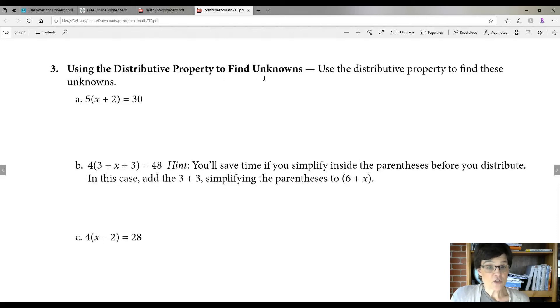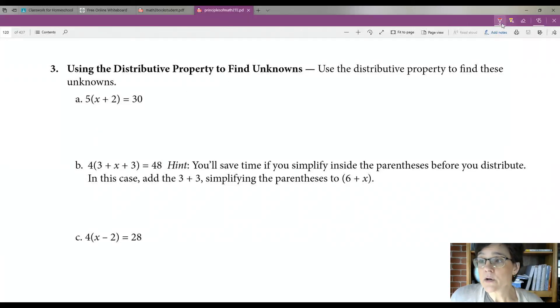Number three, using the distributive property to find unknowns. Remember, now let's work this one. Let's work this one together right quick. So the distributive property, this would be 5 times x, which would be 5x, plus 5 times 2, which would be 10, equals 30. Then you want to get x by itself. So the next logical thing is going to be to subtract 10 from both sides.